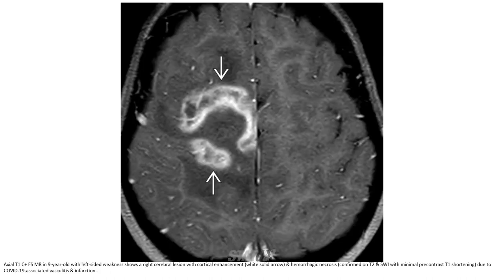T1 contrast-enhanced MRI in a nine-year-old with left-sided mesial cerebral lesion with cortical enhancement and hemorrhagic necrosis, due to COVID-19 associated vasculitis and infarction.